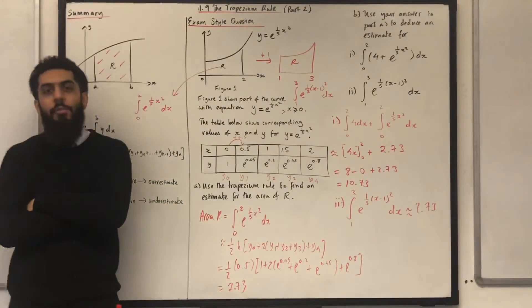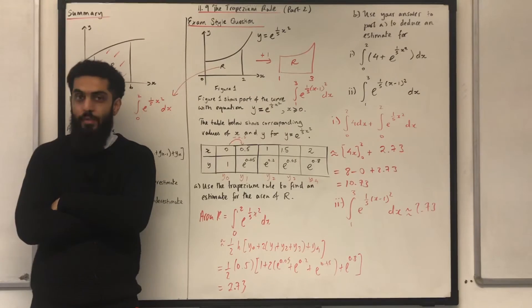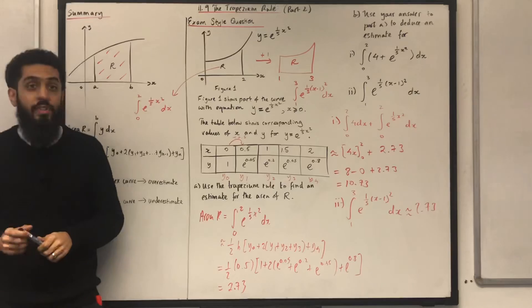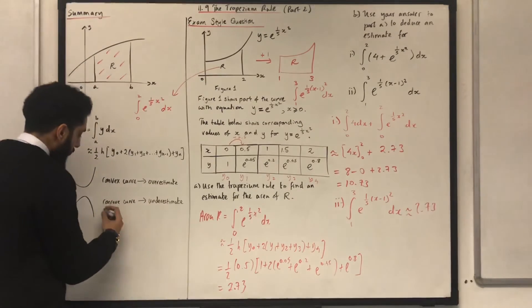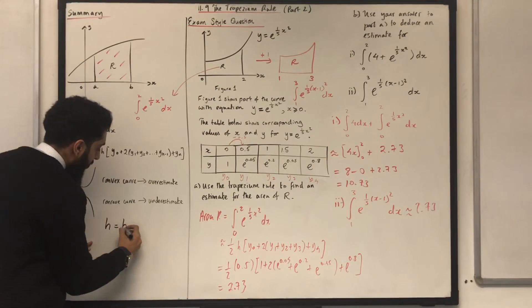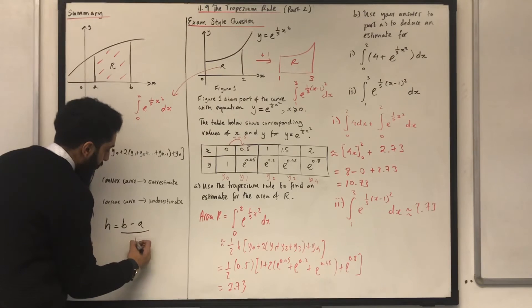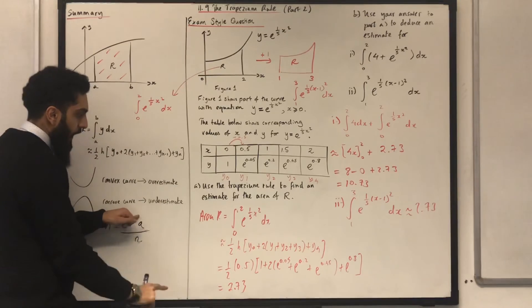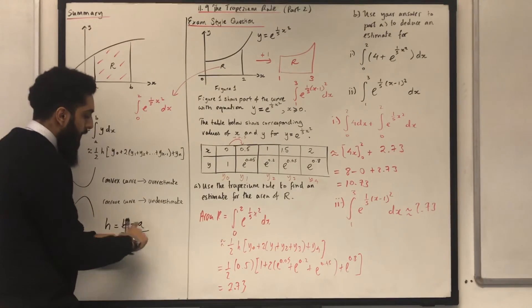What are the other type of questions that you could get on the trapezian rule? One of the other types is to form a table yourself and work out the h value, which is the height of the trapezium, using the formula h equals b minus a over n. Where b represents the upper limit of your area, a is the lower limit of your area, n is the number of trapeziums.